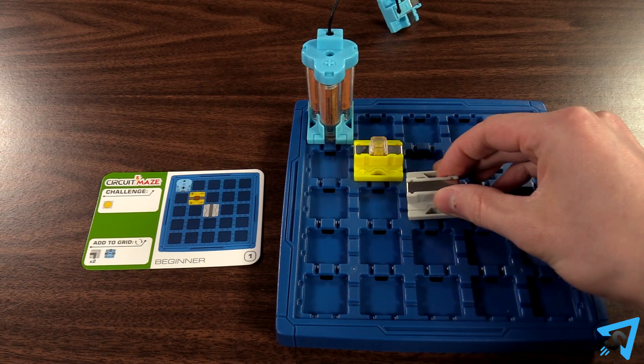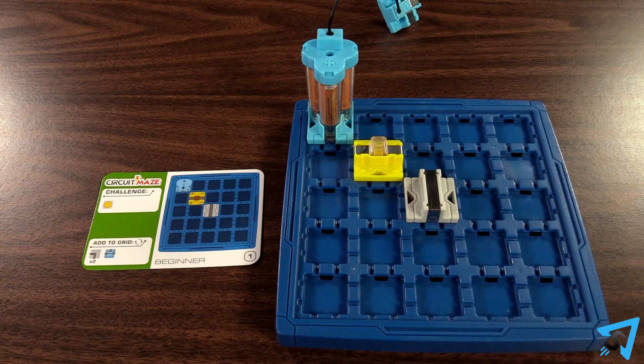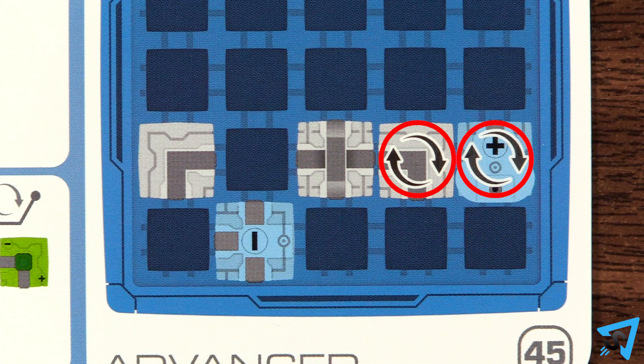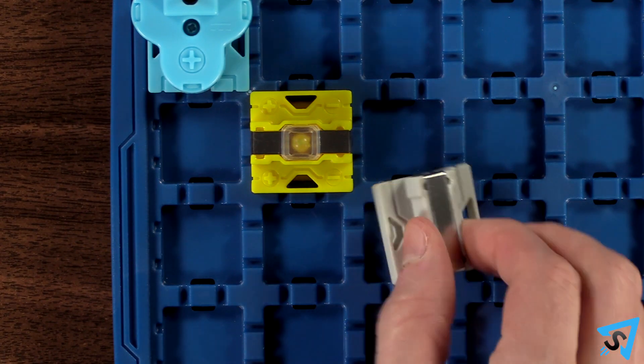Tokens must be oriented identical to their image. If a token has a rotation symbol on it, then that token may be rotated in order to find the correct solution. Otherwise, the tokens may not be rotated.